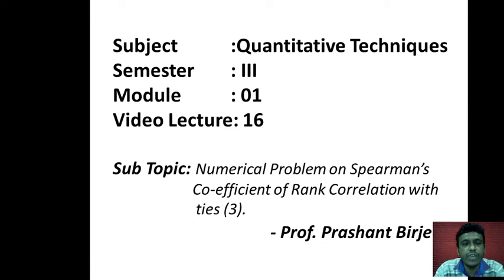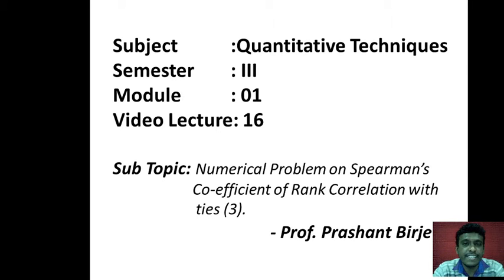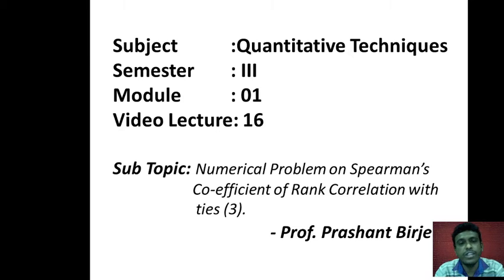Hello and welcome to the 16th video lecture of quantitative technique semester 3, module number 1. In this video lecture, we would be solving one more problem on Spearman's coefficient of rank correlation. In our previous video lecture, we had taken one problem where there were ties that existed at one place only. Such kind of ties can exist at more than one place. So in today's problem, we are taking a problem where there are ties at two different locations — one in the X variable and another in the Y variable.